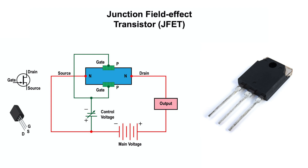FETs have three connections: source, gate, and drain. The gate may be thought of as controlling the opening and closing of a physical gate — it permits electrons to flow through or blocks their passage by creating or eliminating a channel between the source and the drain. FETs are unipolar; their working current flows through only one type of semiconductor material. This is in contrast to bipolar transistors, which have current flowing through both N-type and P-type regions. The main difference between N and P-types is that the polarities of voltage are connected in the opposite direction.